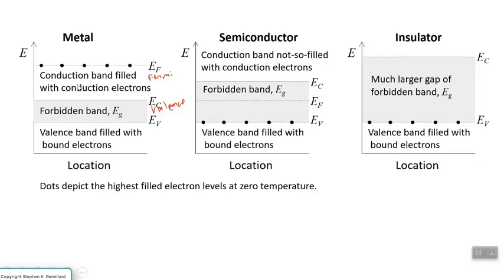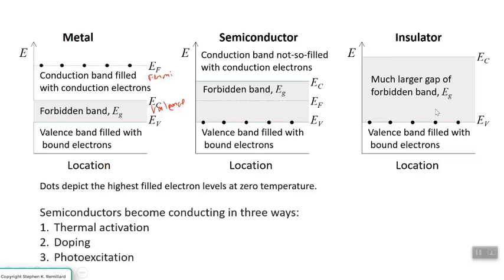So those are the three situations we can have inside of a crystalline environment. A metal, where electrons are populating the conduction band. A semiconductor, where all of the electrons just fill the valence band perfectly. And if they do get up there, it's only by excitation. And an insulator, where the band gap is so big you just can't get electrons up there, period.